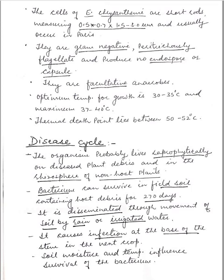Disease cycle: The organism probably lives saprophytically and can survive for about 20 days, living on to infect the next crop. It is disseminated through the movement of soil by rain or irrigation water.